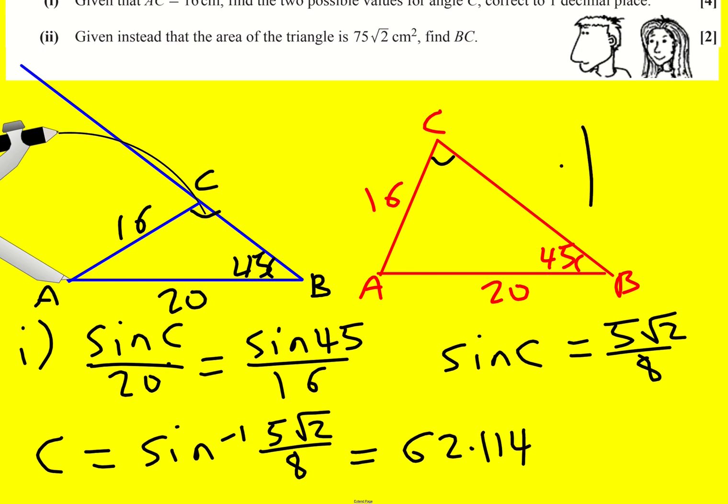But we've seen these two solutions. How do we get the other solution? Well, if we understand the sine curve, we've just found out this one. So we want this one over here, this acute one, and to do that we do 180 minus 62.14.